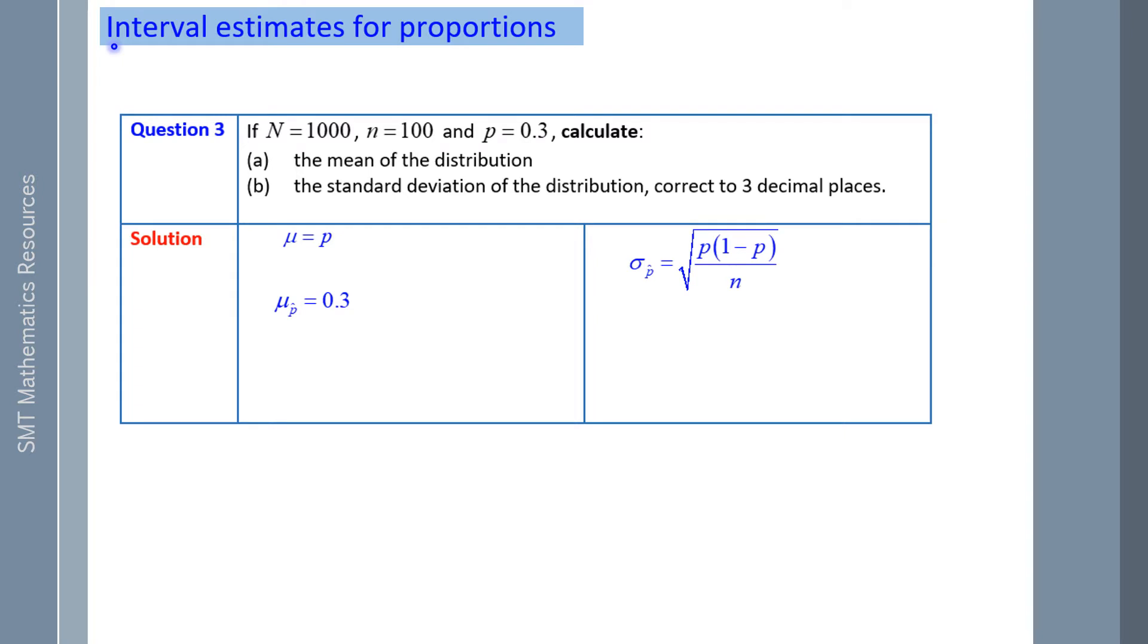The standard deviation of the distribution is recalling the formula from the formula page, which is the square root of P times 1 take P over N. We substitute our values in, and the standard deviation is approximately 0.046.